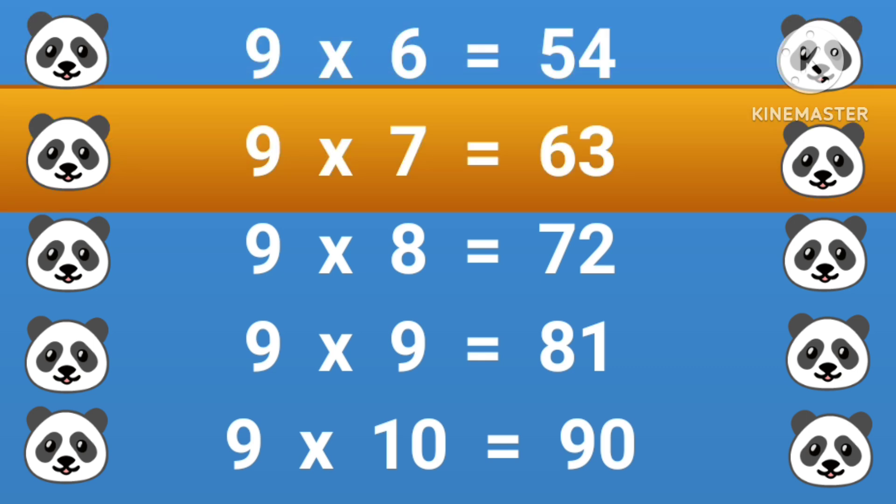9 times 7 equals 63, 9 times 8 equals 72, 9 times 9 equals 81, 9 times 10 equals 90.